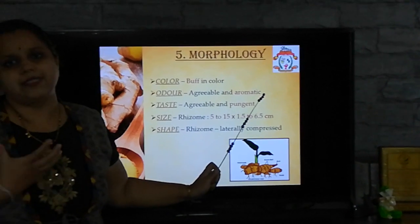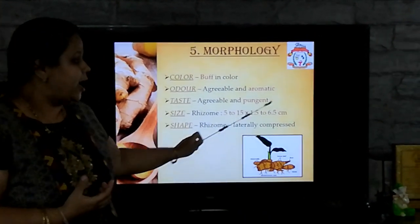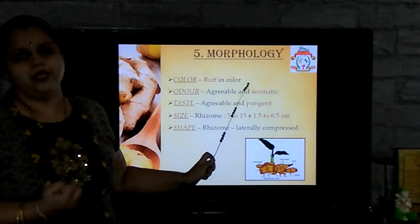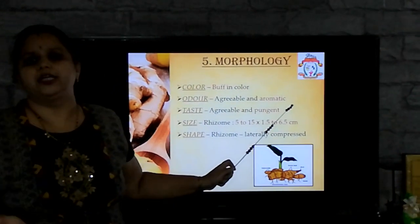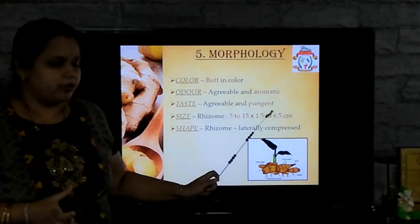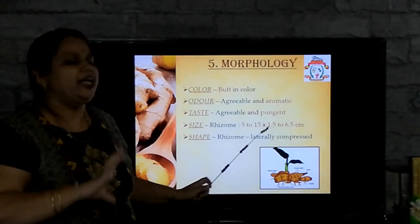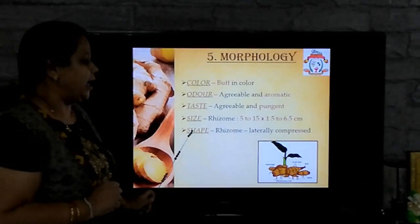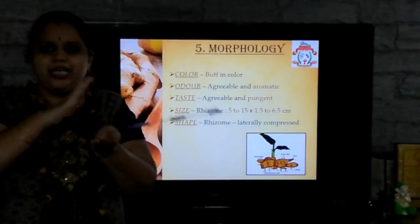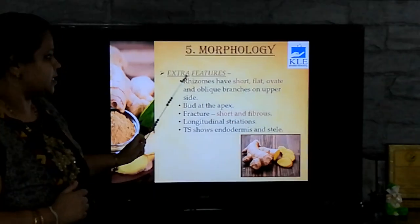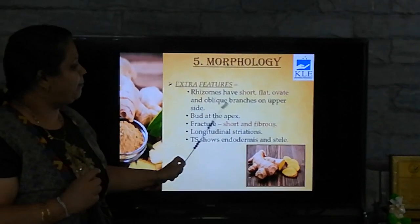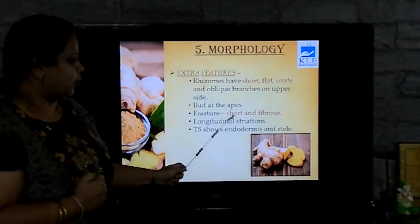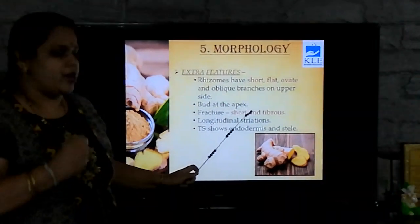Odour is agreeable and it is aromatic — it has a pleasant smell, and volatile oil is one of the components responsible. Taste is also agreeable and it is pungent, so if you eat it directly you will feel it is a little spicy. Size: when measured with a scale, it can vary from 5 to 15 centimetres in length and 1.5 to 6.5 centimetres in breadth. The shape is laterally compressed. As for extra features, the rhizomes have short, flat, ovate and oblique branches on the upper side, and you can observe the bud at the apex. Fracture is short and fibrous, with fibres extending, and longitudinal striations are easily observed.